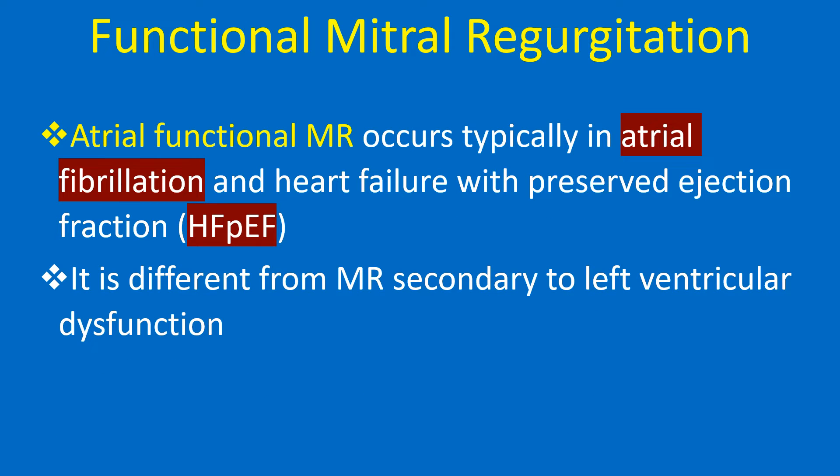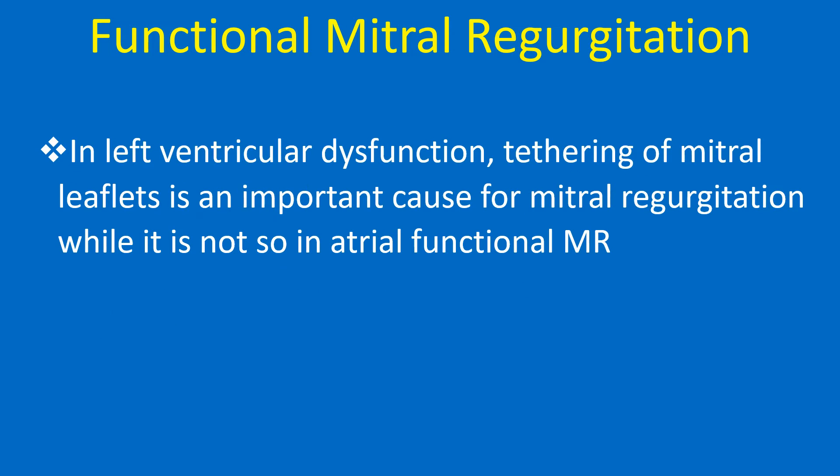Atrial functional MR occurs typically in atrial fibrillation and heart failure with preserved ejection fraction. It is different from MR secondary to left ventricular dysfunction. In left ventricular dysfunction, tethering of mitral leaflets is an important cause for mitral regurgitation, while it is not so in atrial functional MR.